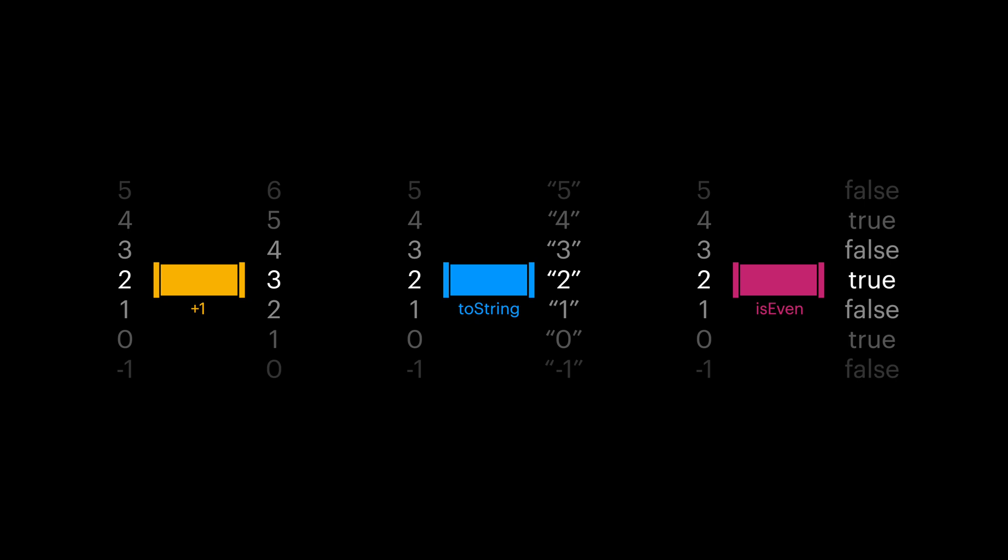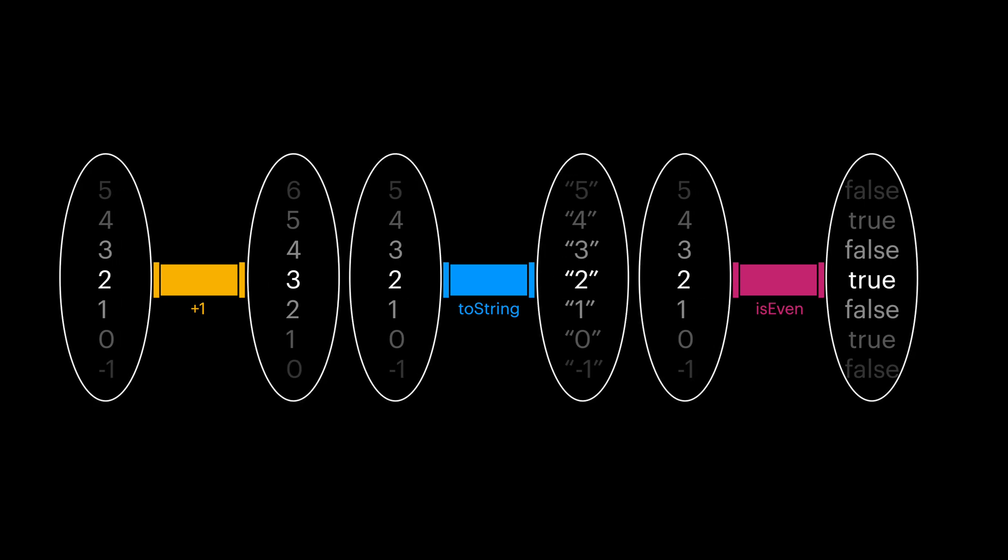For the toString function, input is a set of all integers and the output is a subset of all the strings. For the isEven function, the input is a set of all integers and the output is a set of boolean values, of which there are only two: true and false. We can think of these sets as universes.